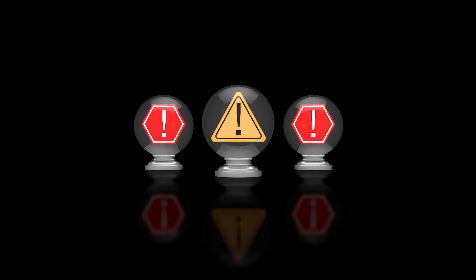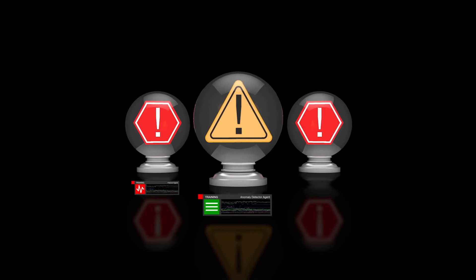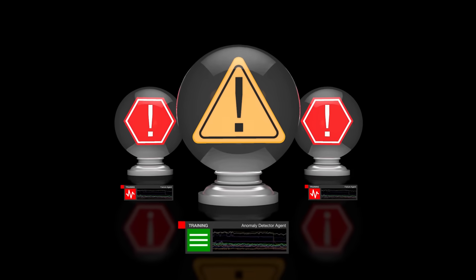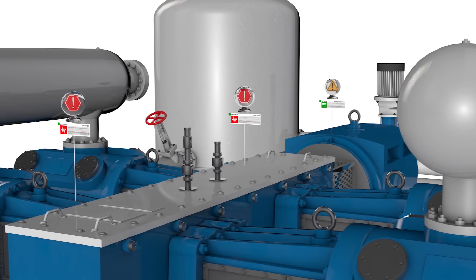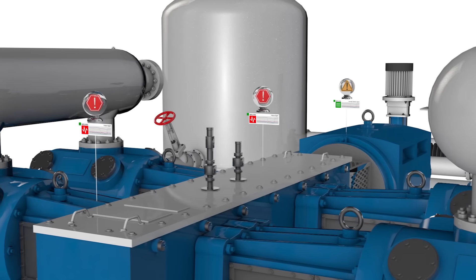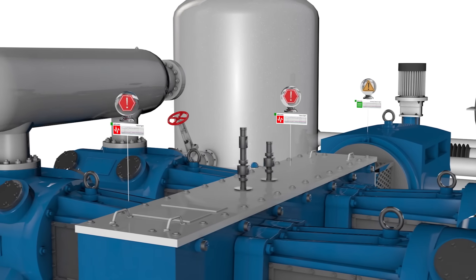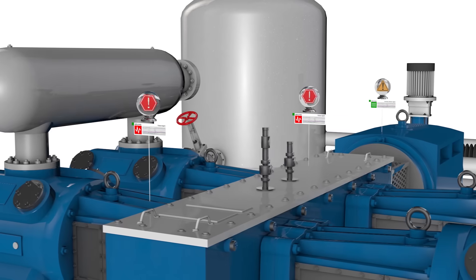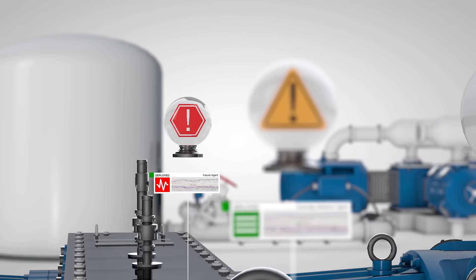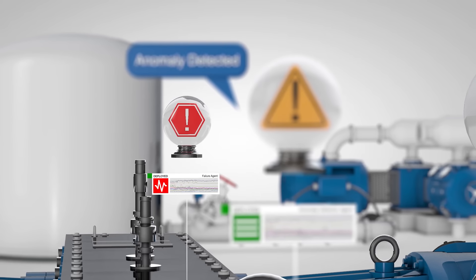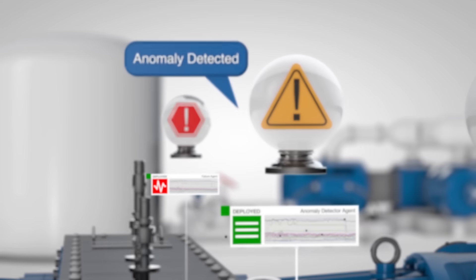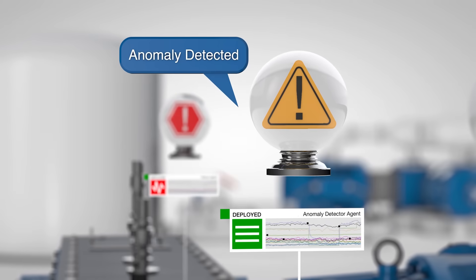What is an agent? An agent is an automated software component that performs machine learning so you don't have to. What do agents do? Agents watch live equipment feeds looking for specific patterns and data that show both normal and failure behaviors. They send notification alerts when changes in these specific behavior patterns occur.